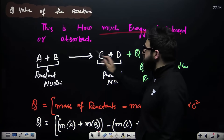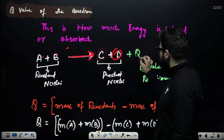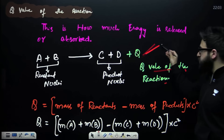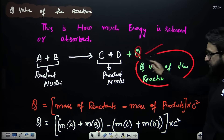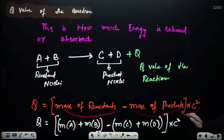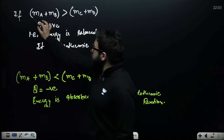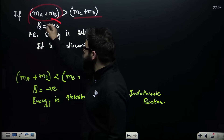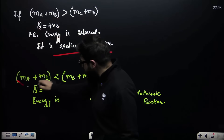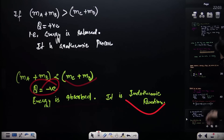Q-value of a nuclear reaction indicates how much energy is absorbed or released. For the reaction A + B → C + D, Q = (mass of A + mass of B − mass of C − mass of D) × c². If mass of reactants is greater than mass of products, Q is positive — energy is released (exothermic). If mass of reactants is less than mass of products, Q is negative — energy is absorbed (endothermic).